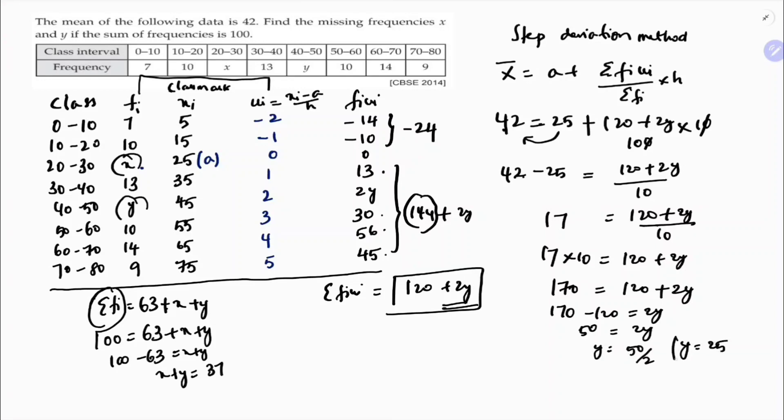Now substitute here x plus y is 37, so x plus 25 is 37, so x is 37 minus 25, so x value is 12. So in this way x and y values we need to calculate.